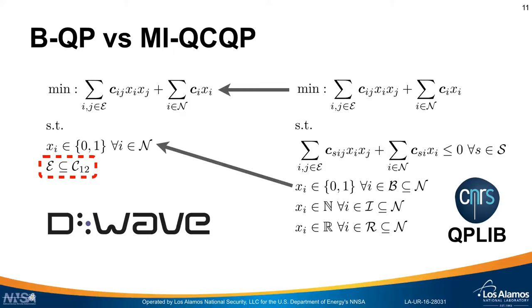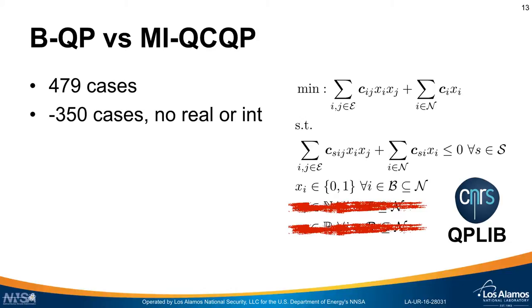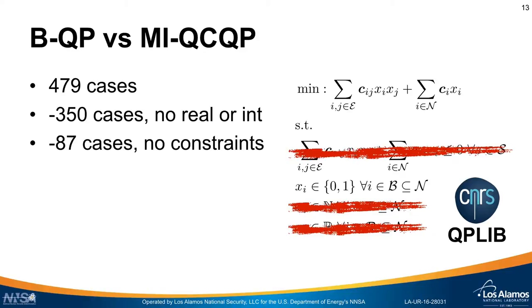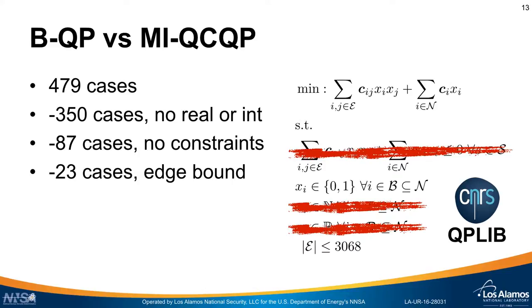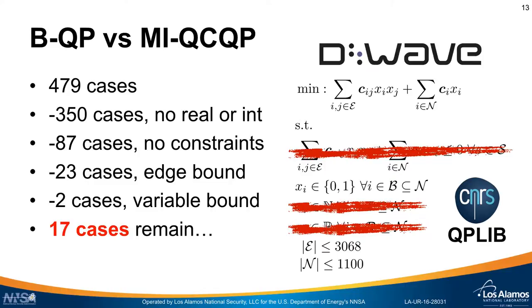Testing whether a problem fits is itself an NP-hard problem, so instead we put in some sufficient conditions: the number of variables should be less than 1,000 and the number of edges should be less than 3,000. Starting with the 479 test cases in the QPLib and reducing them: removing all cases with real or integer variables removes 350 cases; removing cases with any kind of constraints removes 87 more; the edge restriction under 3,000 removes 23; and the variable restriction under 1,000 removes two more. So now we have 17 cases that remain.